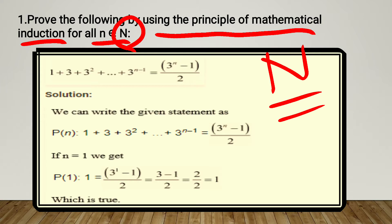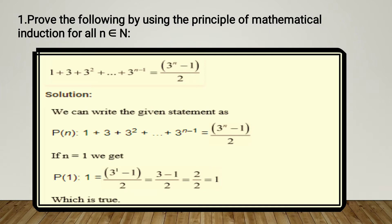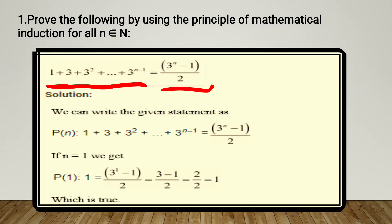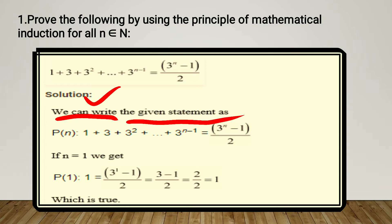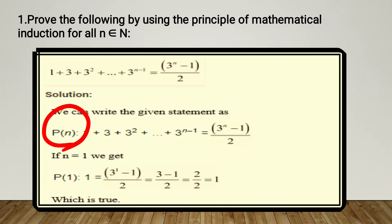Let's look at question number 1. The condition given is: 1 + 3 + 3² + ... + 3^(n-1) = (3^n - 1) / 2. Everything from the left up to here is the LHS part, and the right side is the RHS part. When we solve the solution, we write the given statement as P(n). This means you have a statement given.